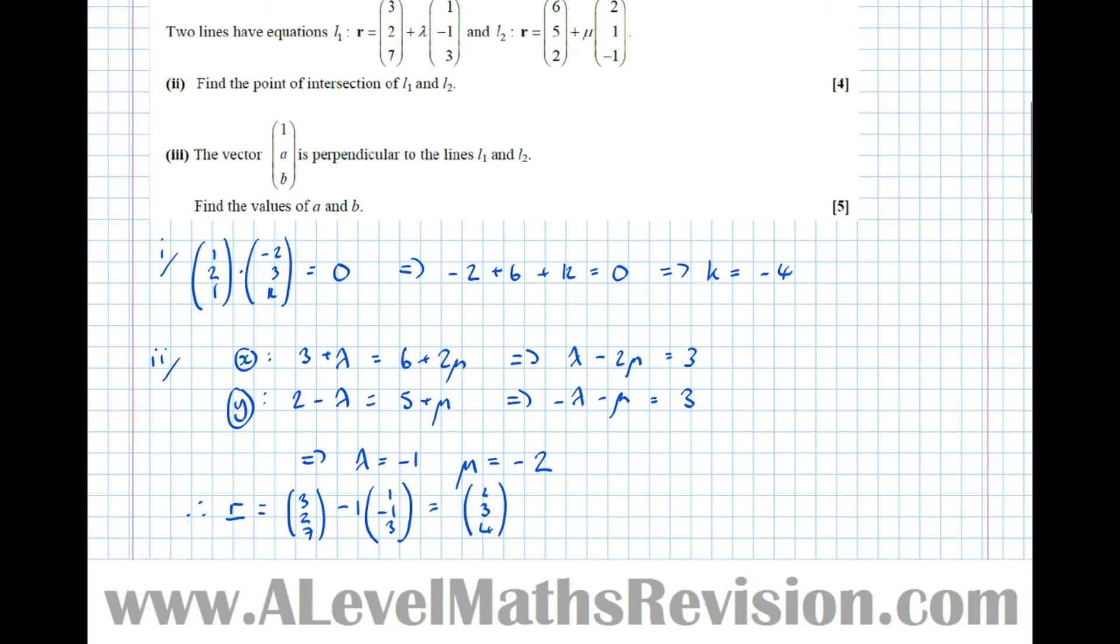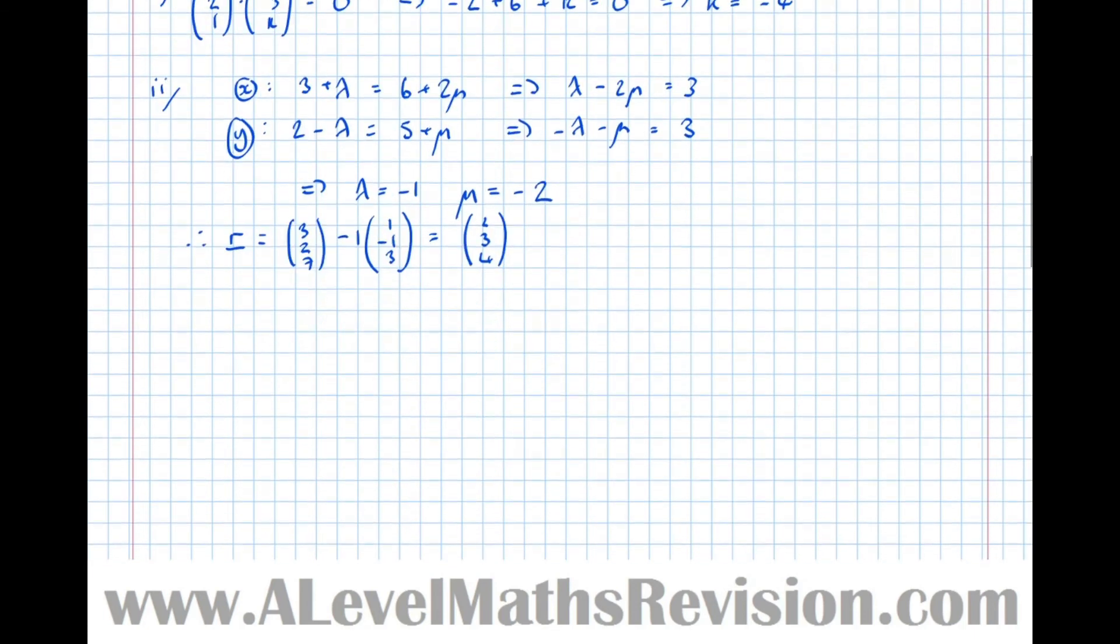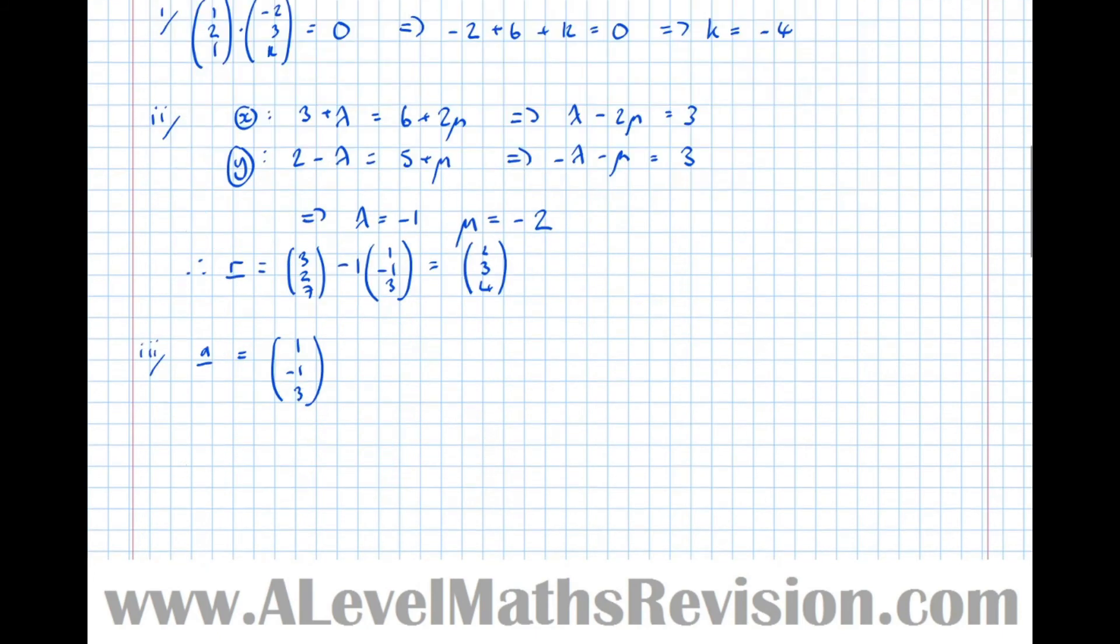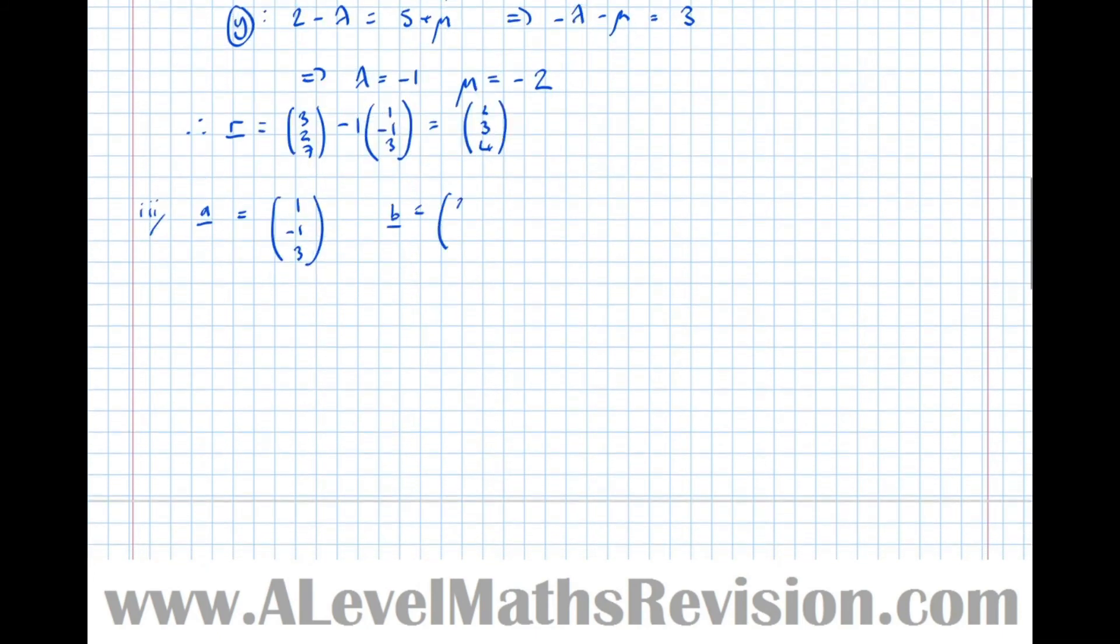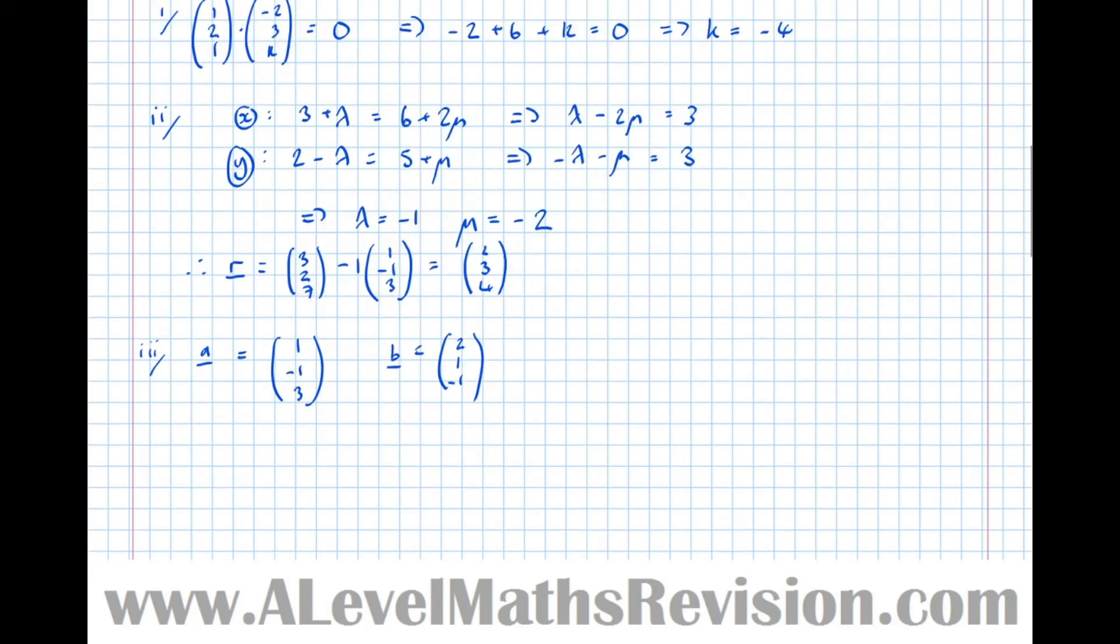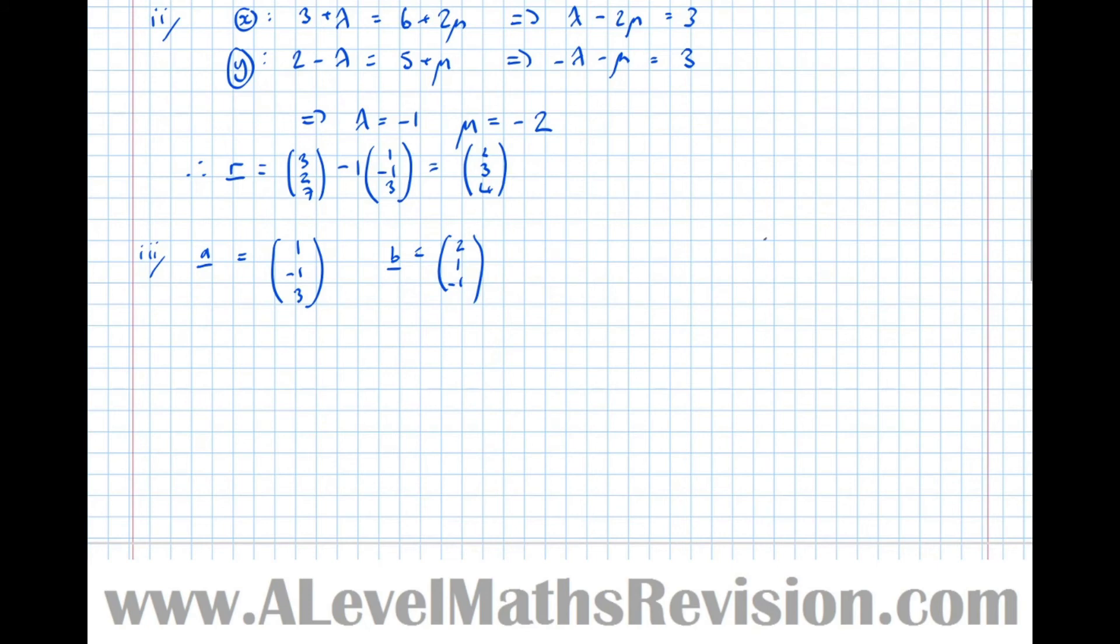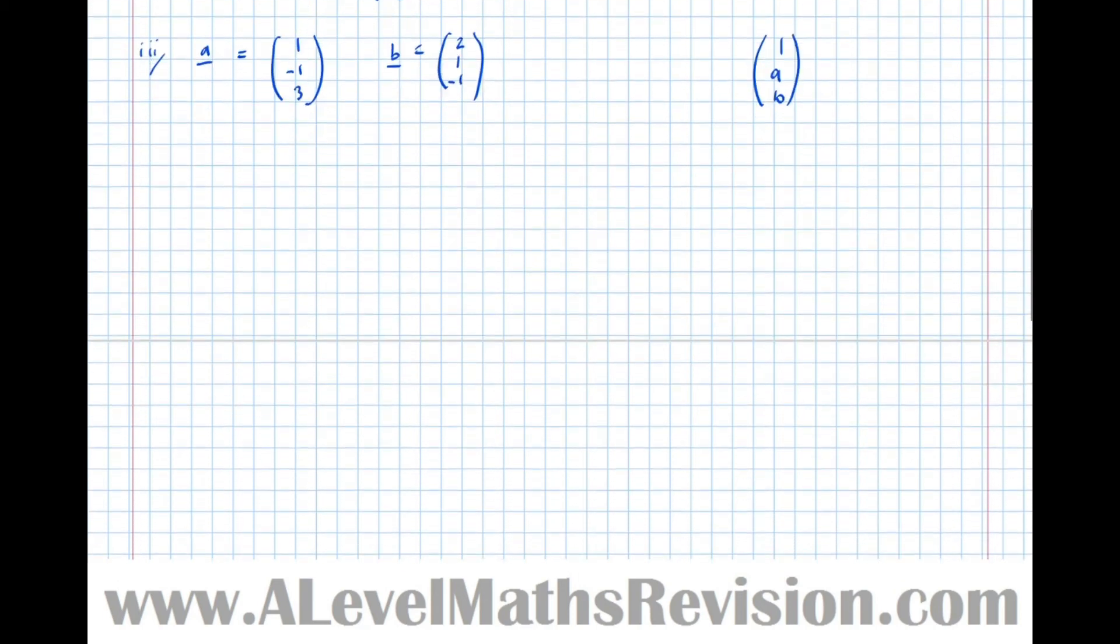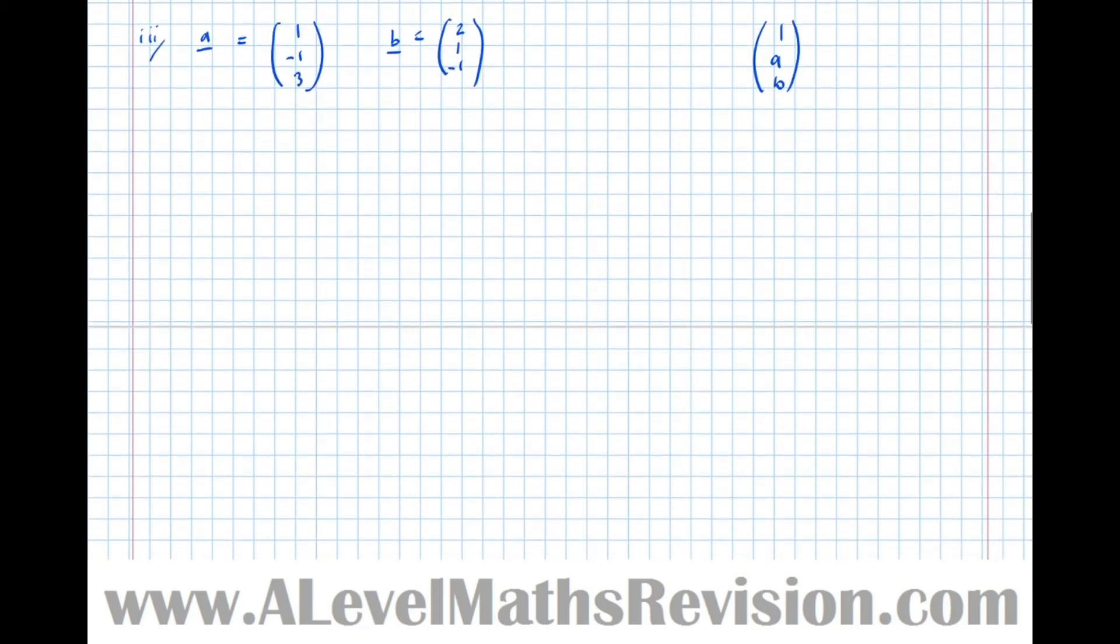For the third part: the vector 1AB is perpendicular to those lines L1 and L2. Find the values of A and B. Again, we're talking about the angle between two vectors, between two vector lines. The only thing that's relevant is their direction. It's the direction that dictates the angle between two vectors. Part 3: Let A equal 1, minus 1, 3, and B is 2, 1, minus 1. We're told that's perpendicular to 1AB. Just to remind, 1AB is the vector that it's perpendicular to. If we get the cross product between these two vectors, we get a perpendicular vector, which has to be parallel to this one. Let's do it.